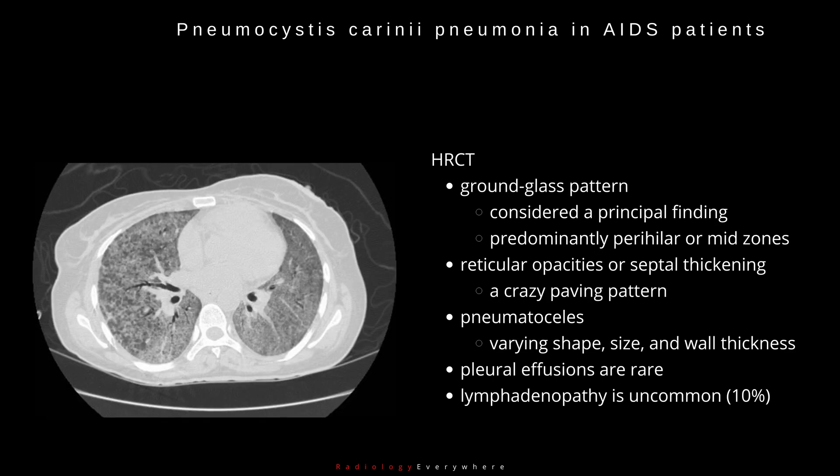On HRCT, the ground glass pattern is considered a principal finding, predominantly perihilar or in the mid-zones. Reticular opacities or septal thickening may also be present. If ground glass opacity and septal thickening are both present, you can see a crazy paving pattern.